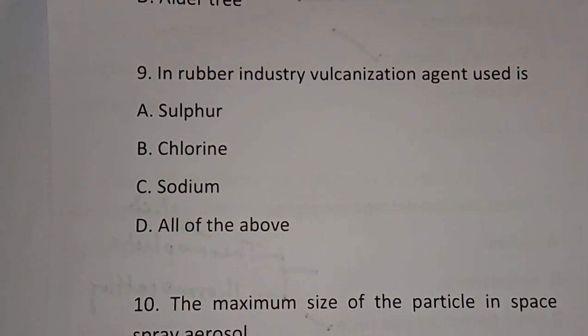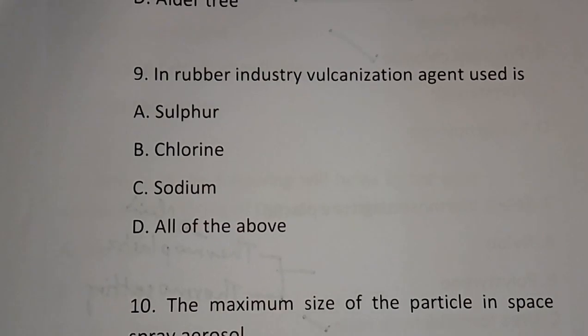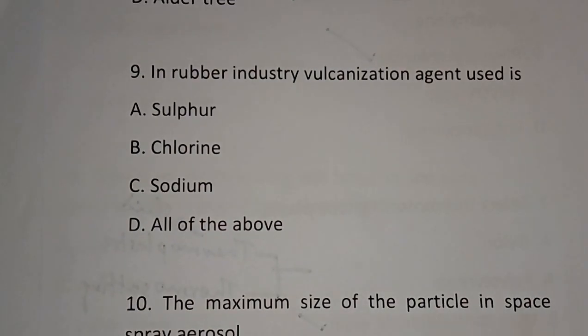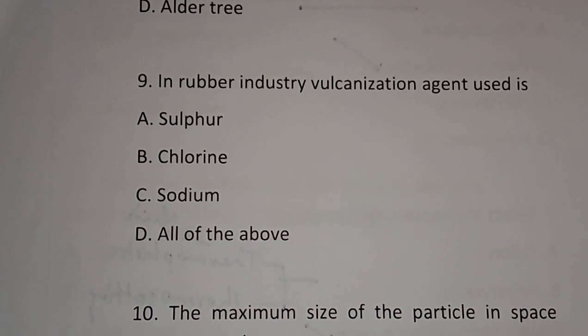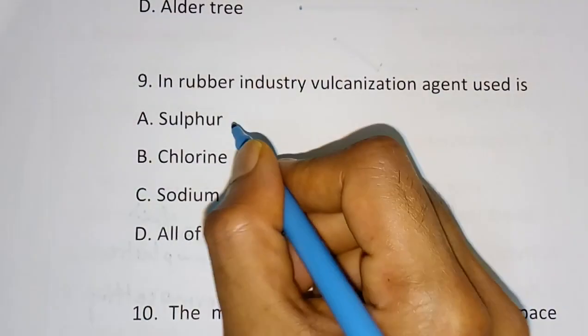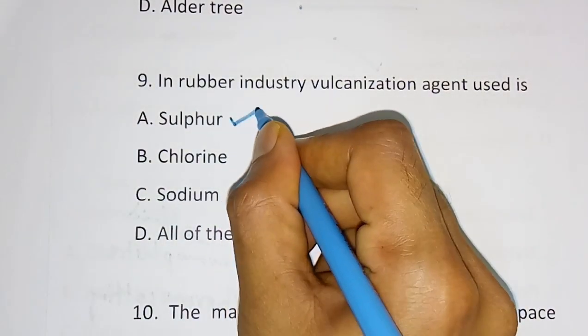Question number 9: In the rubber industry, the vulcanization agent used is — options are sulfur, chlorine, sodium, or all of the above. The correct answer is sulfur.